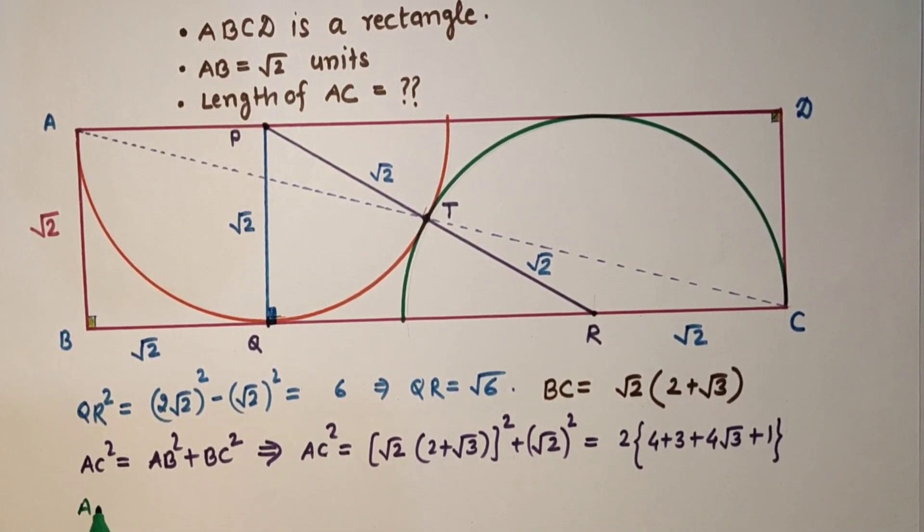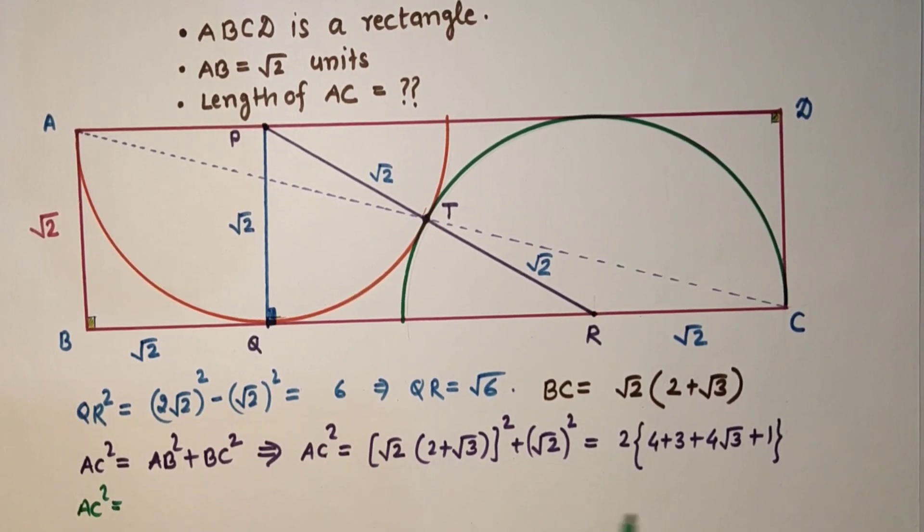That means AC is equal to the square root of 8 plus 4 root 3. So if we take 4 common, 4 times 2 plus root 3.